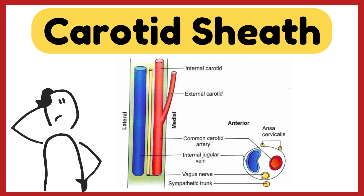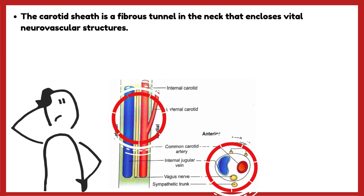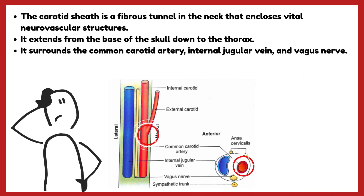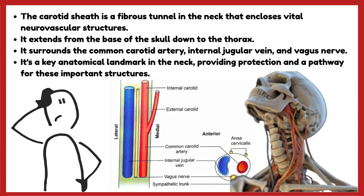The carotid sheath is a fibrous tunnel in the neck that encloses vital neurovascular structures. It extends from the base of the skull down to the thorax. It surrounds the common carotid artery, internal jugular vein, and vagus nerve. It is a key anatomical landmark in the neck, providing protection and a pathway for these important structures.